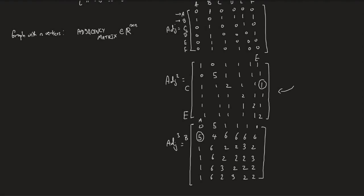This symmetry also holds for the adjacency matrix itself: if you cannot go from C to D, you also cannot go from D to C. Mathematically, the (i,j) entry equals the (j,i) entry, and this applies to any power k. In graph theory, the kth power of the adjacency matrix tells you the number of paths of length k.